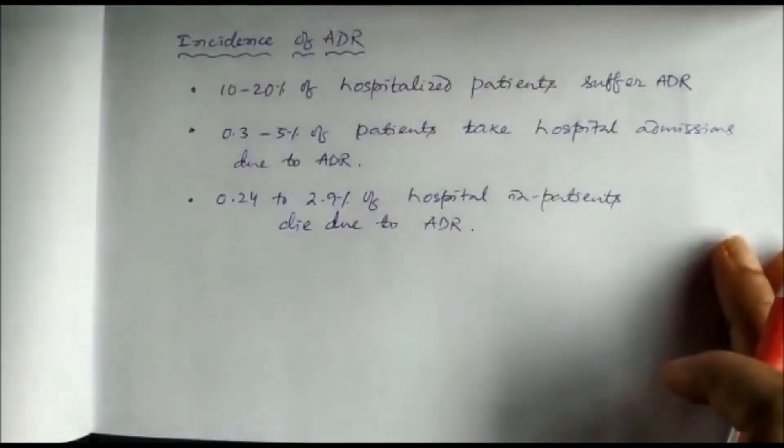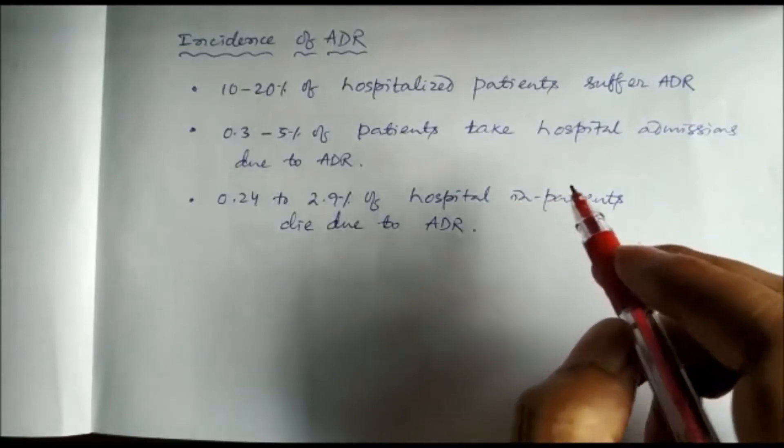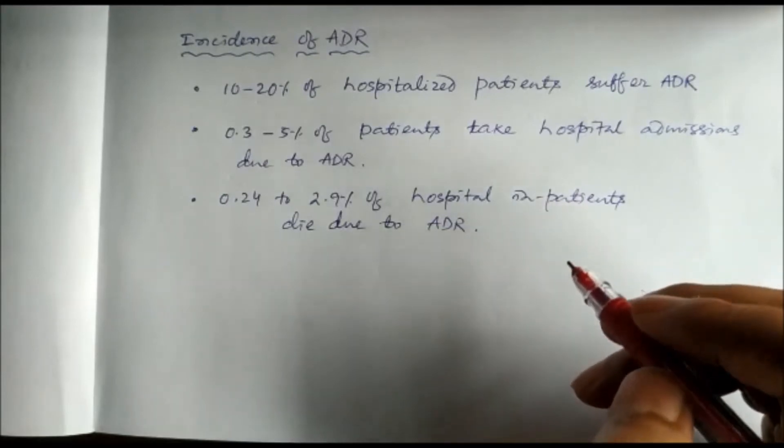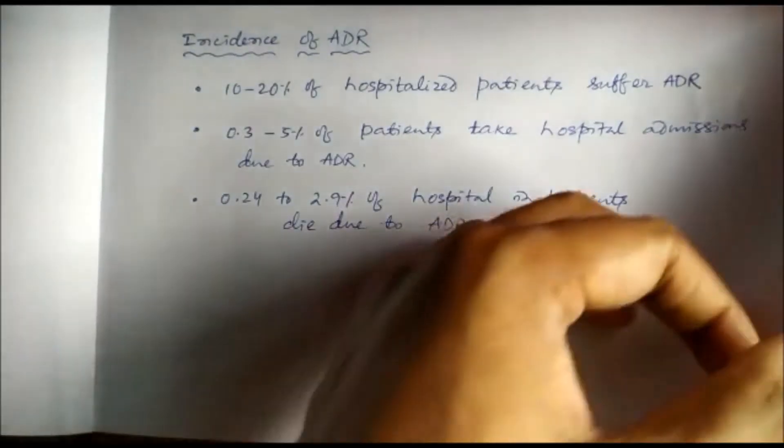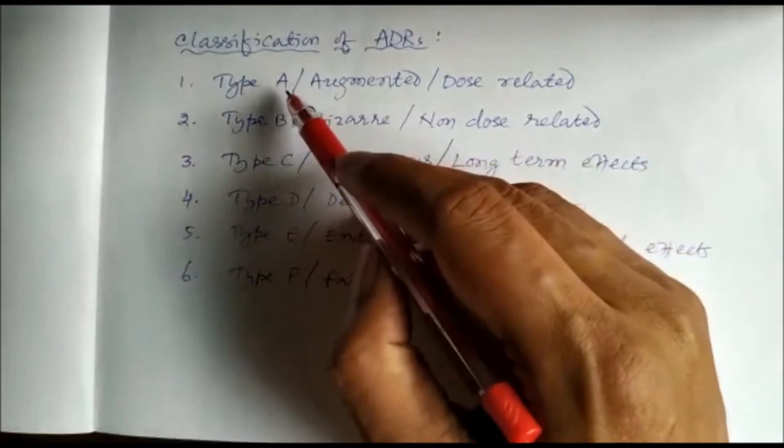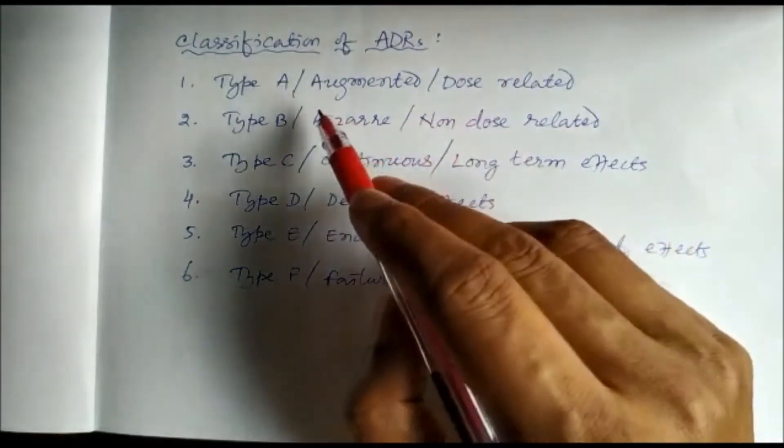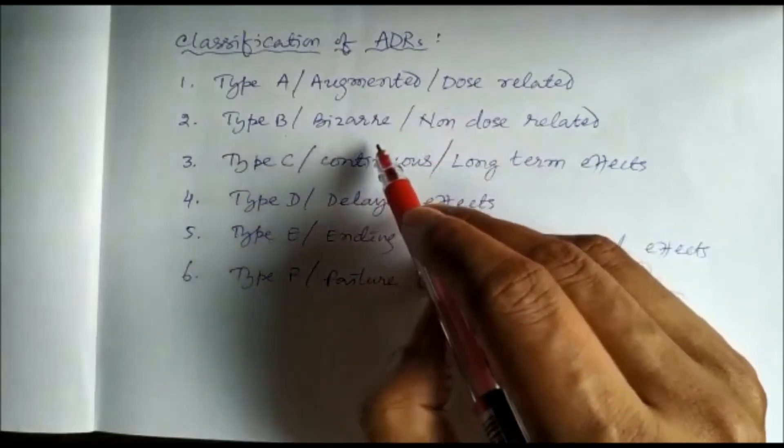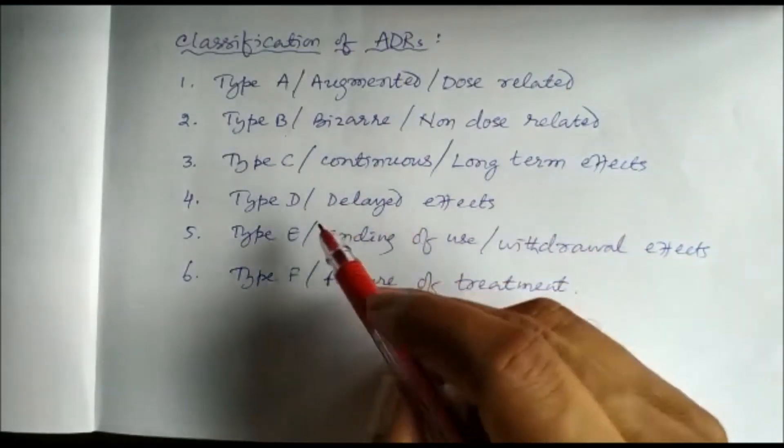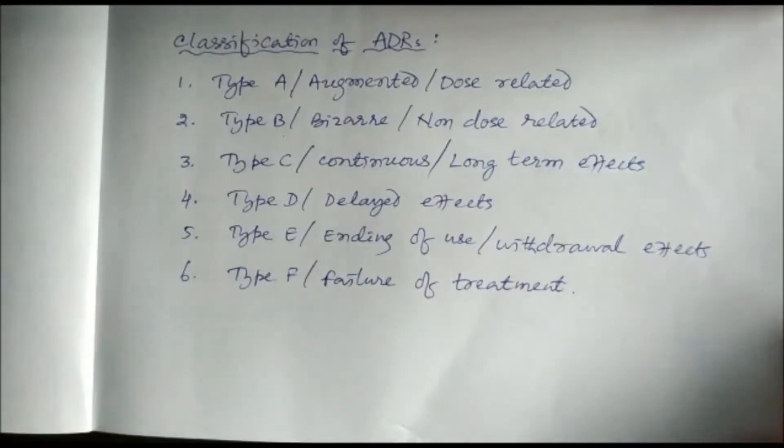If you see the incidence of adverse drug reaction: 10 to 20 percent of hospitalized patients suffer adverse drug reactions, 0.3 to 5 percent of patients take hospital admissions due to adverse drug reactions, and 0.24 to 2.9 percent of hospital inpatients die due to adverse drug reactions. Adverse drug reactions can be of several types. Most common are Type A and Type B. In addition to that, there can be Type C, Type D, Type E, and Type F. Type A is also called augmented or dose-related, Type B is bizarre or non-dose-related, Type C is continuous caused by long-term effects, Type D is delayed effects, Type E is end of use or withdrawal effects, and Type F is caused by failure of treatment.